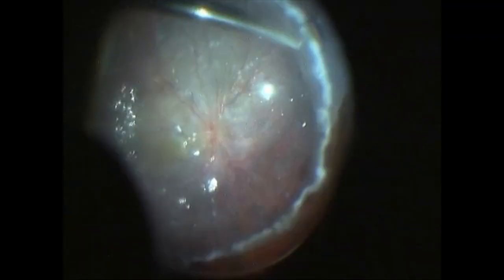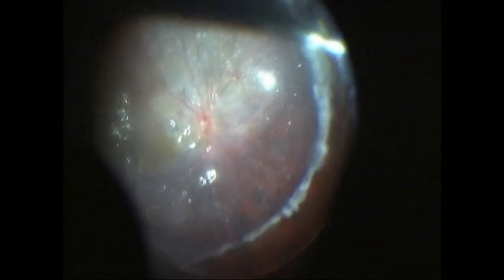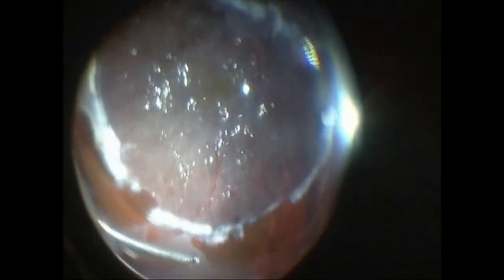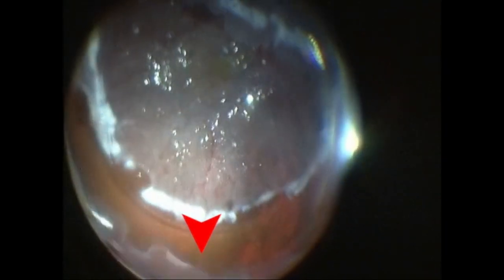The vitrectomy cutter is used to divide the retina at the outer margin of the endodiathermy. Care is taken to remove all anterior flaps of the retina which may otherwise adhere to the ciliary body and cause post-operative hypotony.